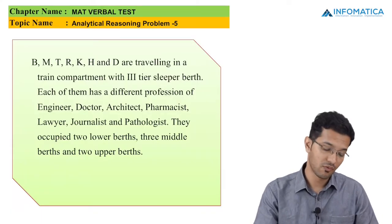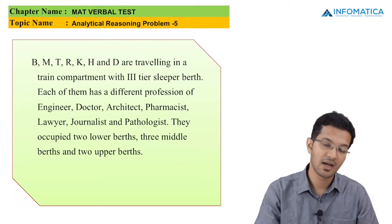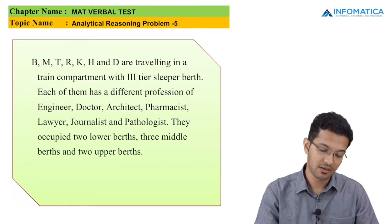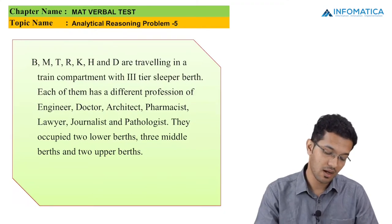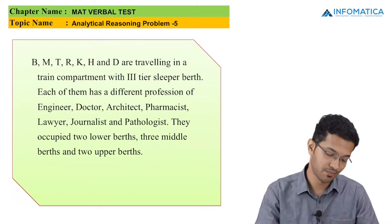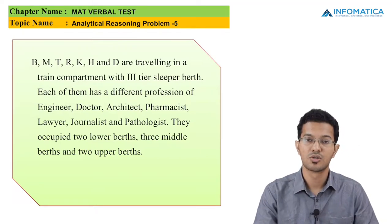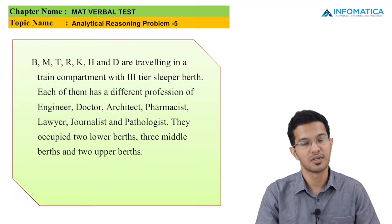The fifth problem states that B, M, T, R, K, H and D are traveling in a train compartment with third-tier sleeper berths. Each of them has a different profession: engineer, doctor, architect, pharmacist, lawyer, journalist and pathologist. They occupied two lower berths, three middle berths and two upper berths. Please take a screenshot of this first page.